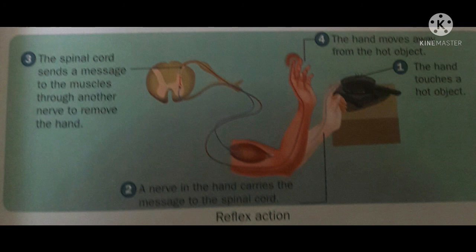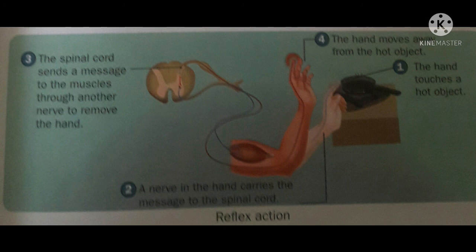When our hand touches a hot object, the messages from our finger are carried by the nerve to the spinal cord. In the second step, a nerve in the hand carries the messages to the spinal cord. In the third step, the spinal cord sends a message to the muscles through another nerve — the motor nerve — to remove the hand.